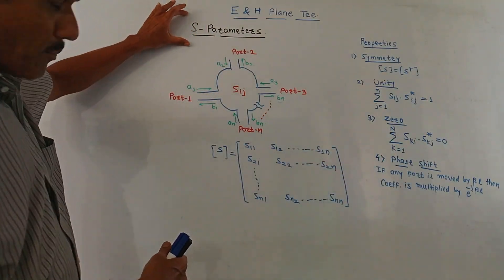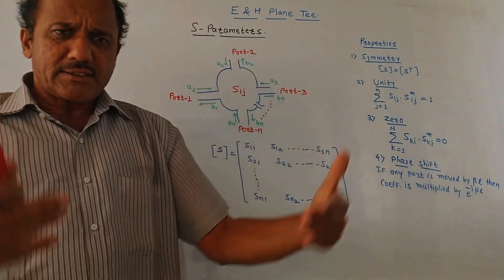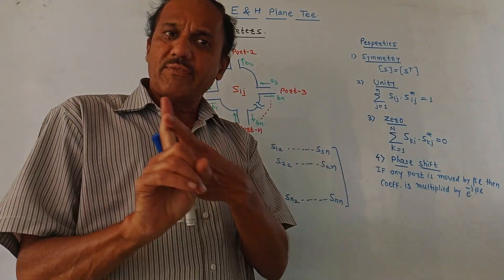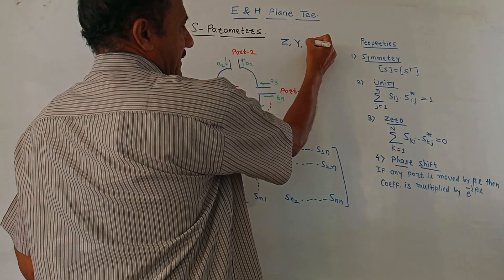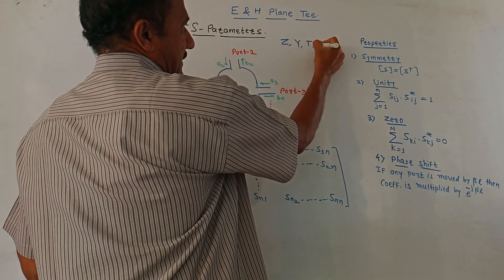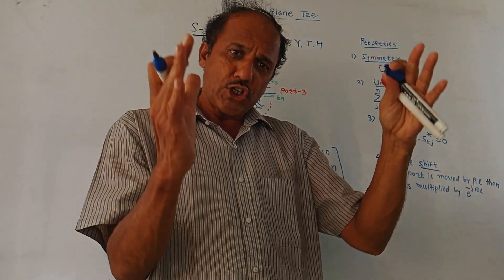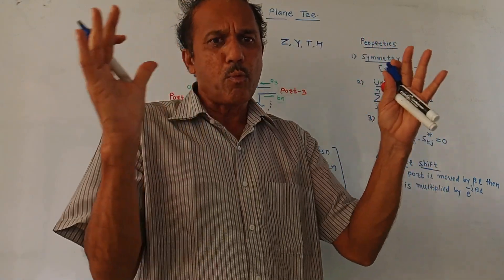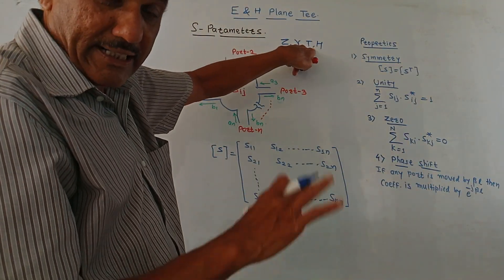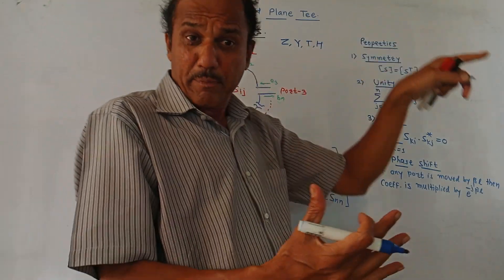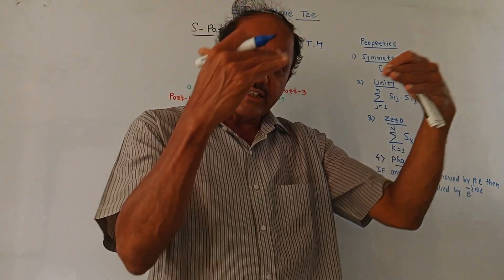First let us talk about the S parameter — S means scattering parameter. In earlier subjects you might have learned two-port network parameters: Z parameters, Y parameters, T (that is A, B, C, D) parameters, hybrid parameters, and so on. These are the normal parameters used for two-port electrical networks. Now these parameters — Z, Y, T, and H parameters — may not be used at microwave frequency because there are certain reasons.